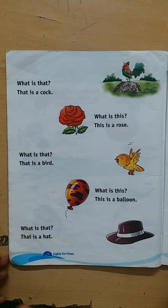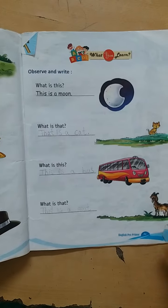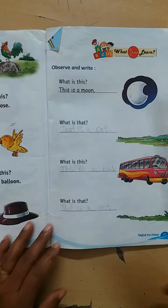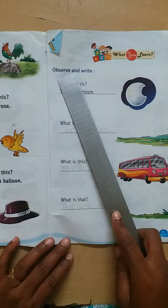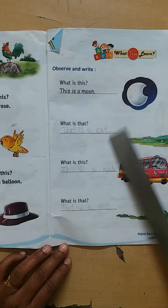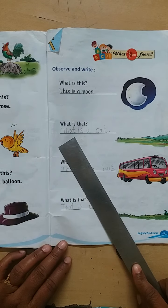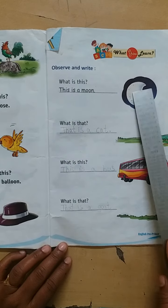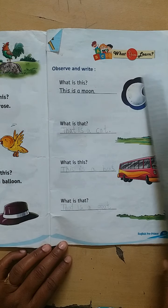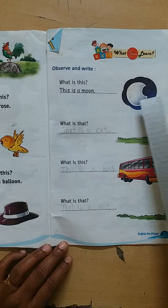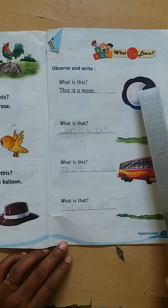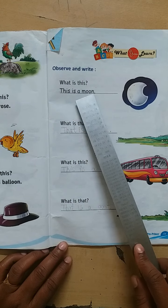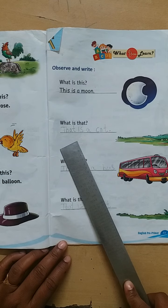I hope you understood. So children, now see the question — observe and write. We have to observe the picture and write the answer. What is this picture, children? Yes, this is a moon. Our answer: This is a moon.